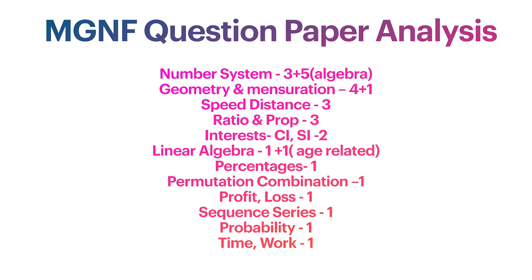Compound interest and simple interest — two questions were asked; doing half a dozen questions will be useful. Linear algebra — two questions were asked; one of the questions was age-related, like the father's age is given and you have to find the age of the daughter. Percentages — one question was asked, but this section is more important than that. You can use percentage concepts in DILR, so if you know the basics properly, that will help you solve those questions very easily and score more marks. So this is obviously worth more than one question.